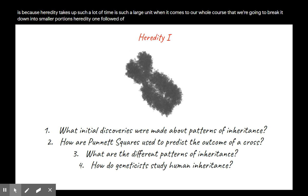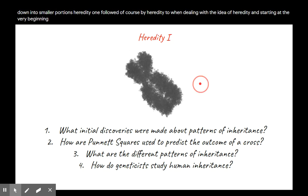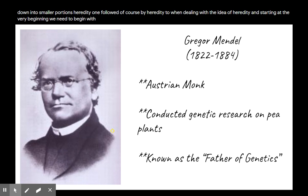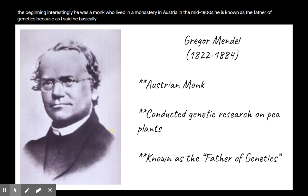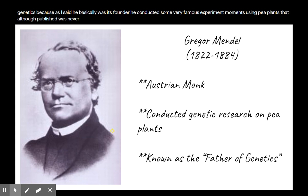When dealing with heredity and starting at the very beginning, we need to begin with a man named Gregor Mendel. Prior to Mendel, there was no field of study of genetics — he was the beginning. Interestingly, he was a monk who lived in a monastery in Austria in the mid-1800s. He is known as the father of genetics because he was basically its founder. He conducted very famous experiments using pea plants that, although published, were never really discovered until after his death, so although he's famous today, he never knew of his own fame.